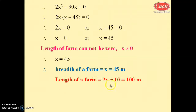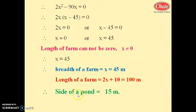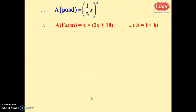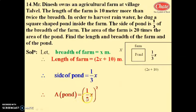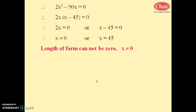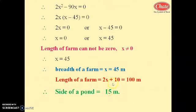So the breadth of the farm is 45 meters. The length of the farm is 2x plus 10, which equals 2 into 45 plus 10, giving 90 plus 10 equals 100 meters. The side of the pond equals (1/3) into 45, which is 15 meters.